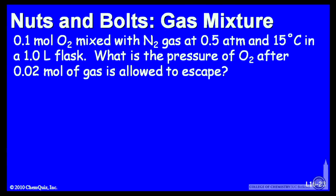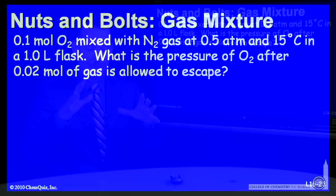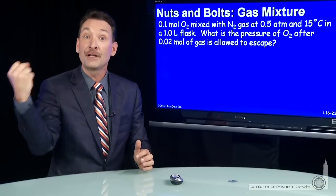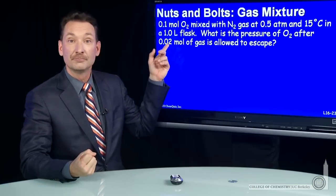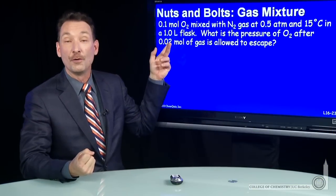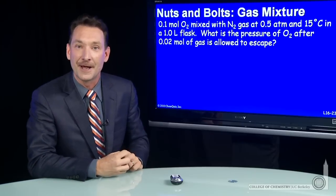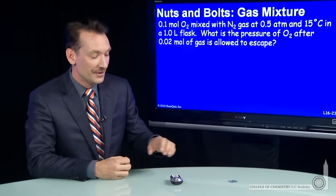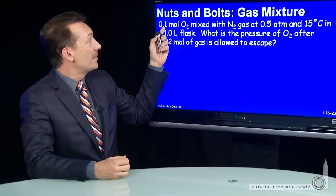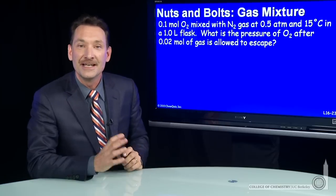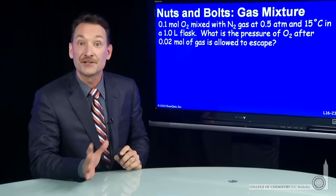Here's an example: a tenth of a mole of oxygen and half an atmosphere of nitrogen in the same flask. Let's mix those together and then pull out a small amount — 0.02 moles — and see how the partial pressures react after that. So let's figure out the partial pressure of oxygen in this flask to start with.